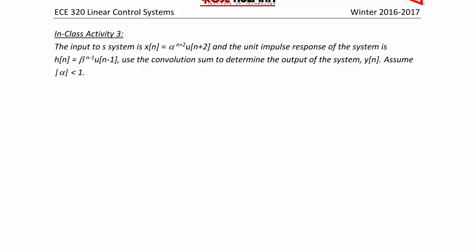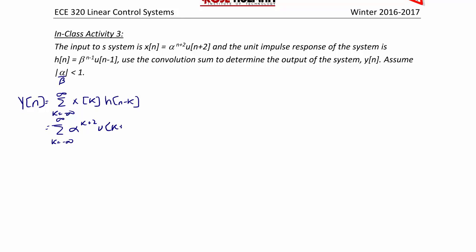In-class Activity 3: The input to a system is x of n equal to alpha to the n plus 2, u of n plus 2. And the unit impulse response of the system is h of n equals beta to the n minus 1. Use the convolution sum to determine the output of the system y of n. We will assume that alpha over beta is less than 1. So, y of n is equal to the summation from k equals negative infinity to infinity of x of k, h of n minus k, which equals the summation of alpha to the k plus 2, u of k plus 2, times beta to the n minus k minus 1, u of n minus k minus 1.